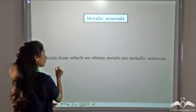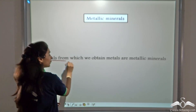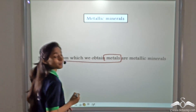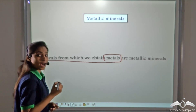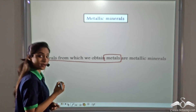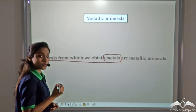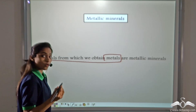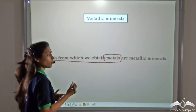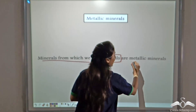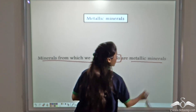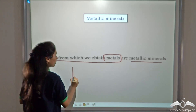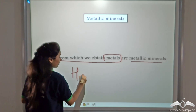Minerals from which we obtain metals are called metallic minerals. In this case, hematite is a mineral from which we can obtain metals such as iron, copper, gold and silver — so it is called a metallic mineral. An example of a metallic mineral is hematite.